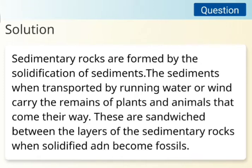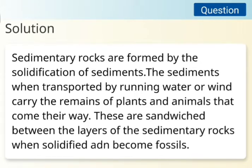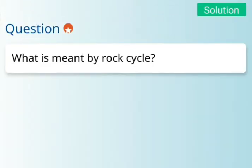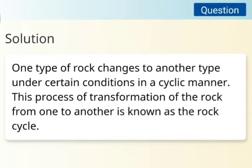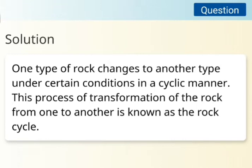The next question is: What is meant by rock cycle? The solution is: One type of rock changes to another type under certain conditions in a cyclic manner. This process of transformation of the rock from one to another is known as the rock cycle.